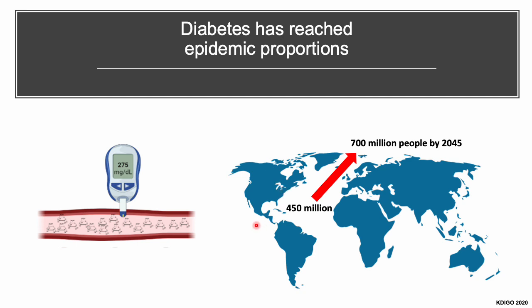In this context, the prevalence of diabetes across the world has reached epidemic proportions. Diabetes is estimated to affect more than 450 million people, and this number is projected to grow over 700 million people by 2045. More than 40% of people with diabetes are likely to develop chronic kidney disease, also known as CKD.